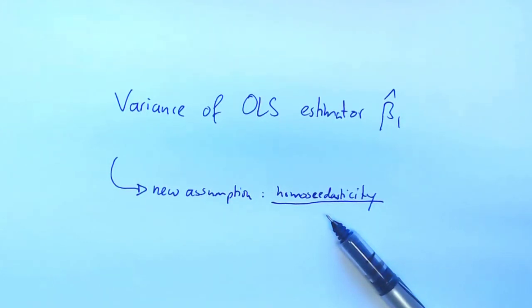And so what's nice is that we will derive nice intuition about what affects the variance and this intuition will still be valid. And once we drop the homoscedasticity assumption, it gives us insight into the more general case that is more realistic.